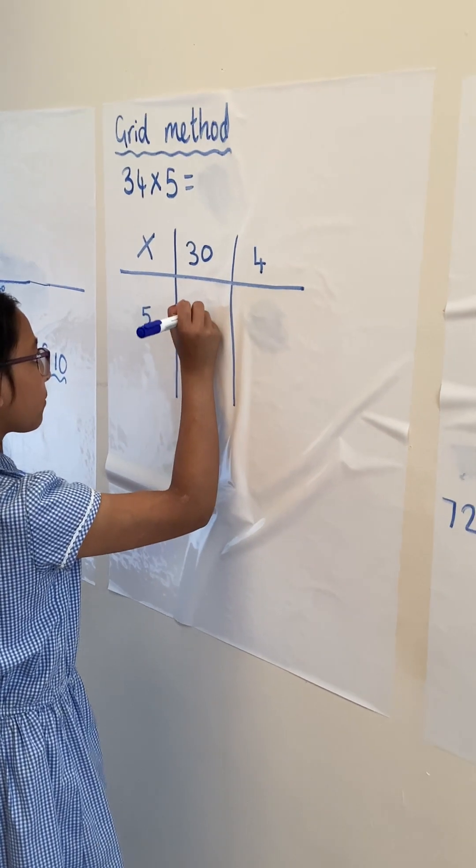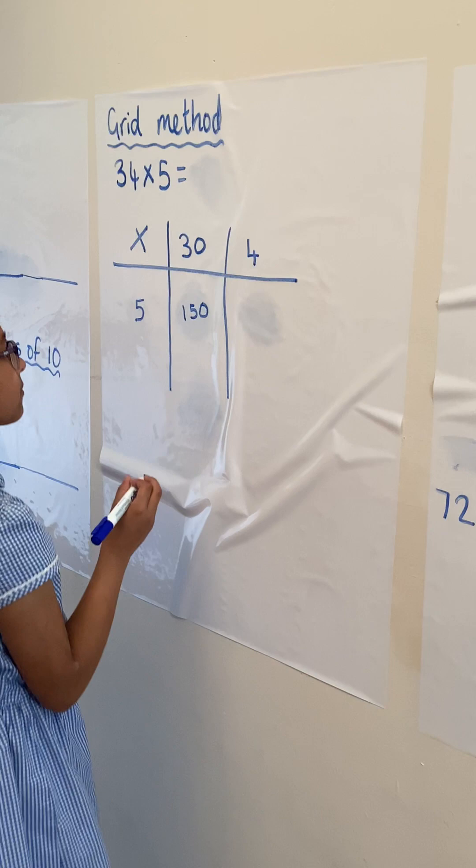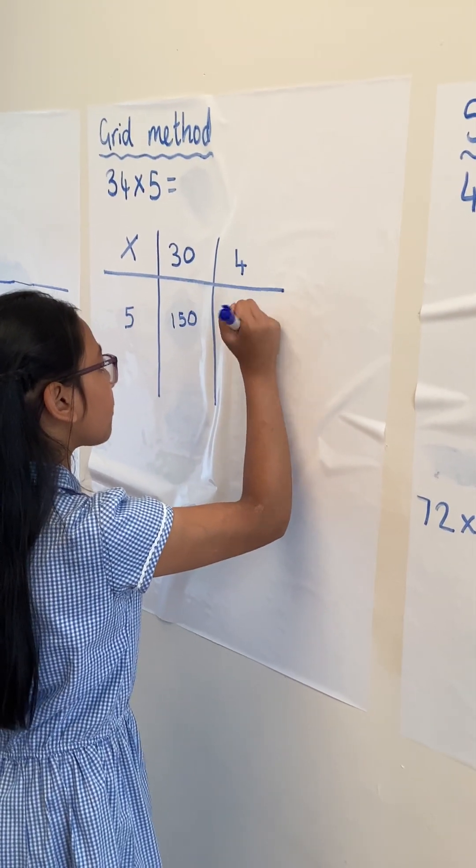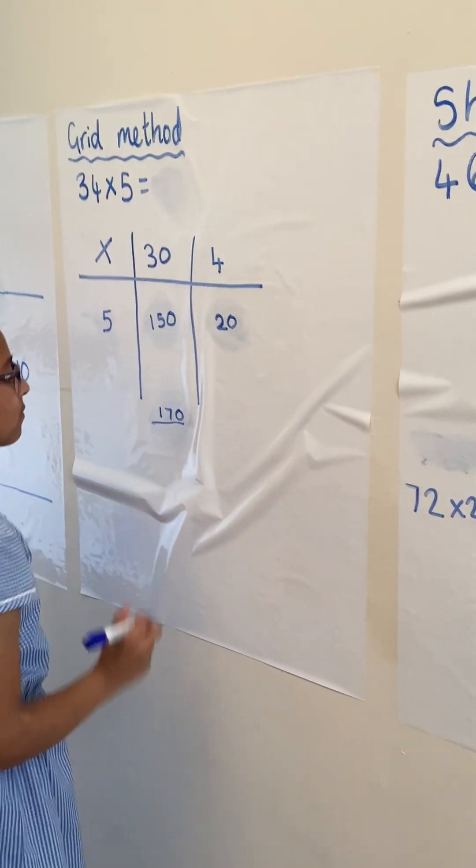We then do 30 times by 5, which is 150, and then we do 5 times 4, which is 20, and then we add together the 150 and the 20 to give us 170.